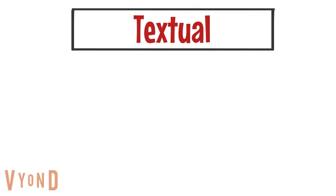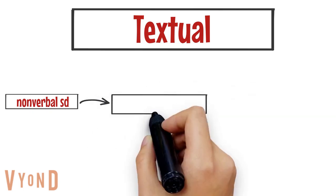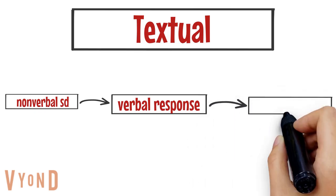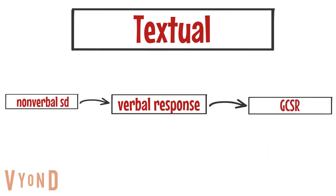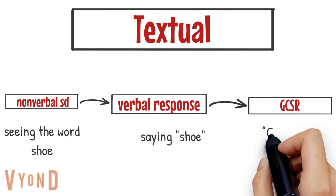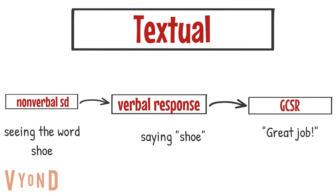Textual behavior is reading without any implication that the reader understands what is being read. The textual operant has point-to-point correspondence but not formal similarity between the stimulus and the response product. For example, seeing the word 'shoe,' then reading the word 'shoe' because you see it, and then receiving praise for reading the word 'shoe.'